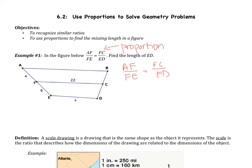Now AF from our figure is 4, FE from our figure is 6, FC is 22, and then ED is X. Now I just use the cross-products property to solve. 4 multiplied by X is going to give me 4X. 6 multiplied by 22 is 132. Now dividing both sides by 4, I get X equals 33.